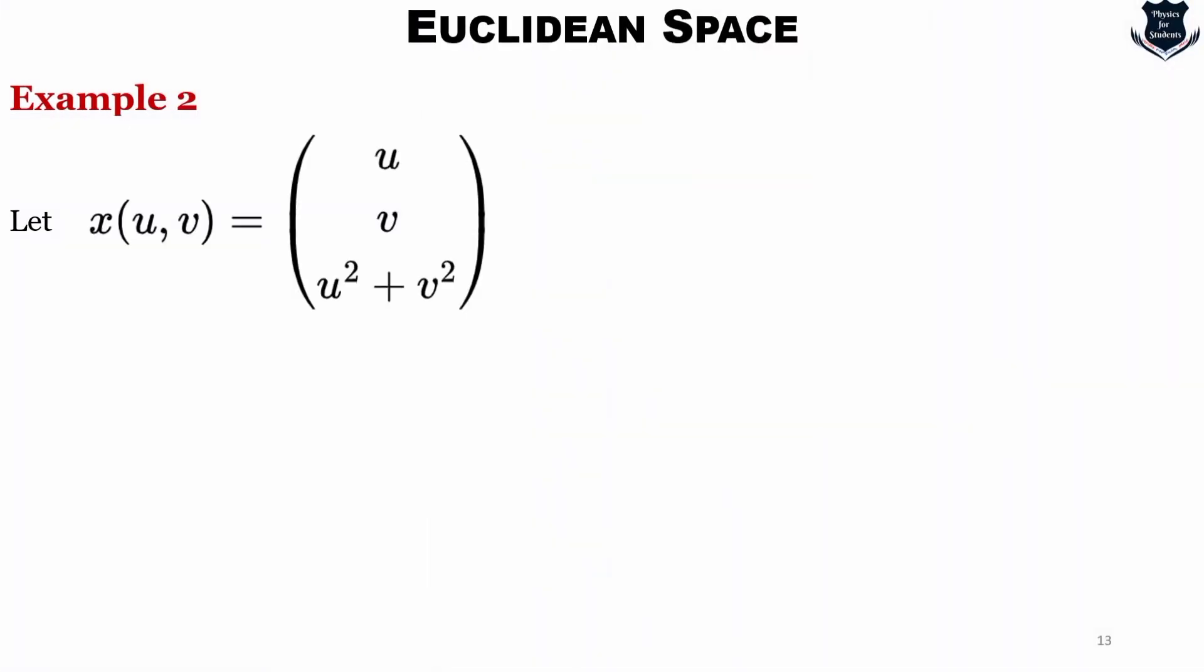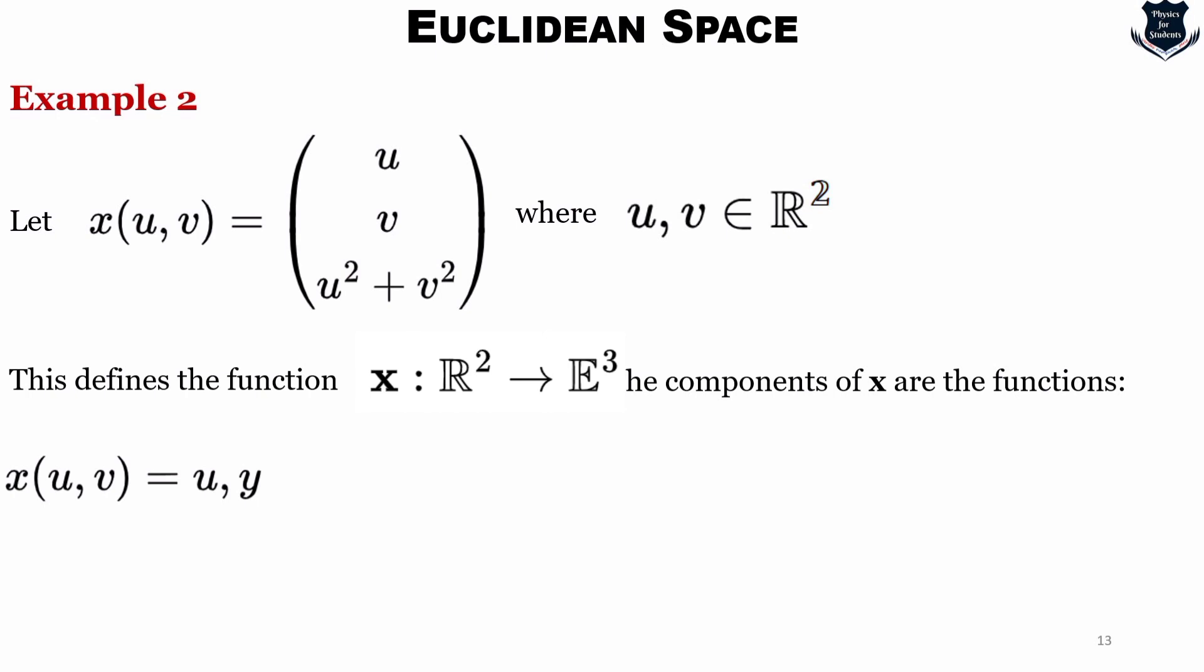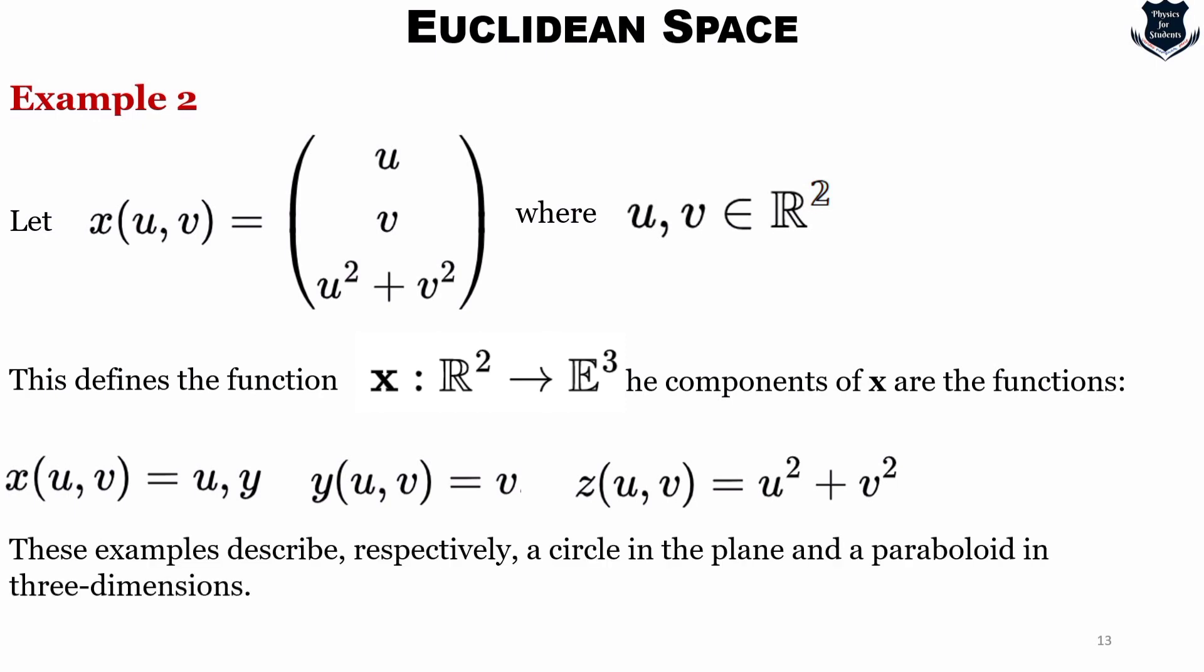Now let us take another example where x equals (u, v, u² + v²) where (u, v) is a member of R or R². I have written as R², can be R also. So this defines the function x, right, and the components of these functions are x(u, v), right, and it would be u, y(u, v) = v, and z(u, v) equals u² + v². So now this is a fairly simple example that's just important to remember that these examples later will describe a circle in the plane and a paraboloid in three dimensions. And here you see that it is E³ and the reason is quite obvious.